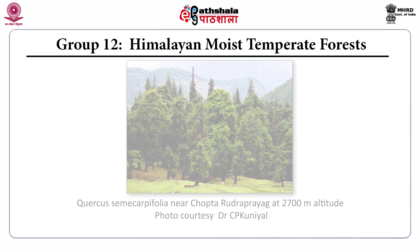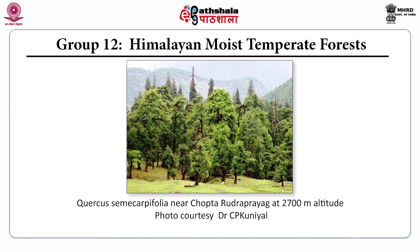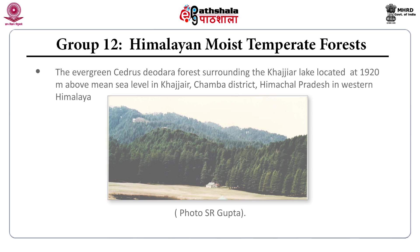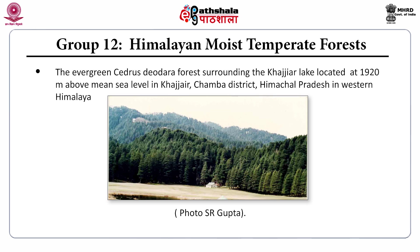A view of the Himalayan moist temperate forest dominated by Quercus semicarpifolia is from the Rudraprayag region at an altitude of 2700 meters. The moist Himalayan temperate forest also includes an evergreen Cedrus deodara forest surrounding the Khajjiar lake, located at 1920 meters above mean sea level in Khajjiar, Chamba district of Himachal Pradesh in the Western Himalaya.